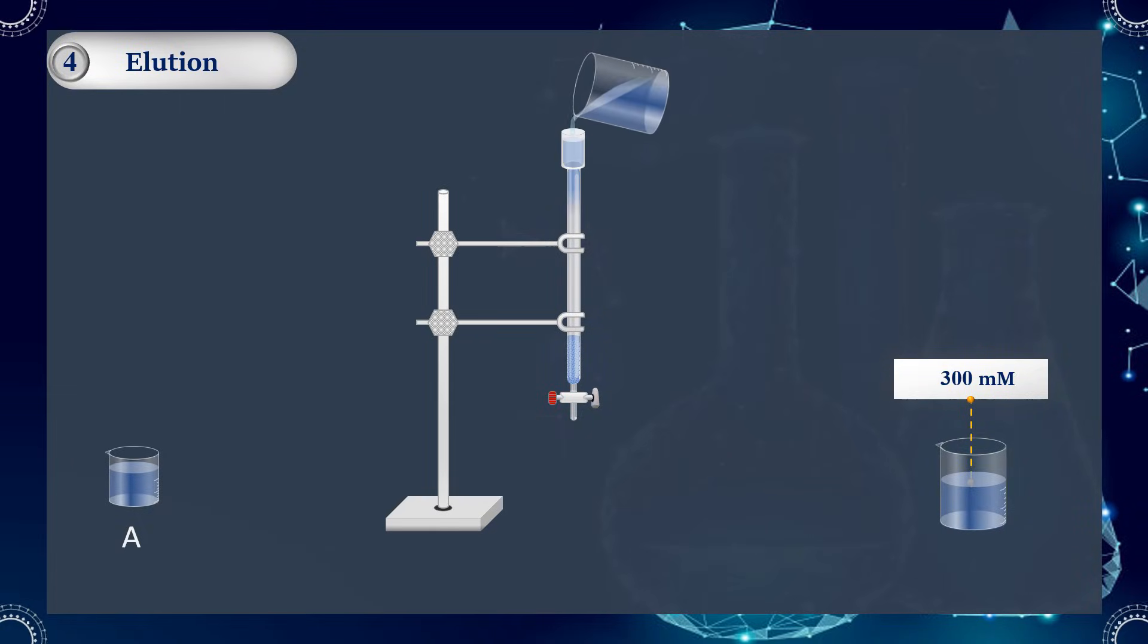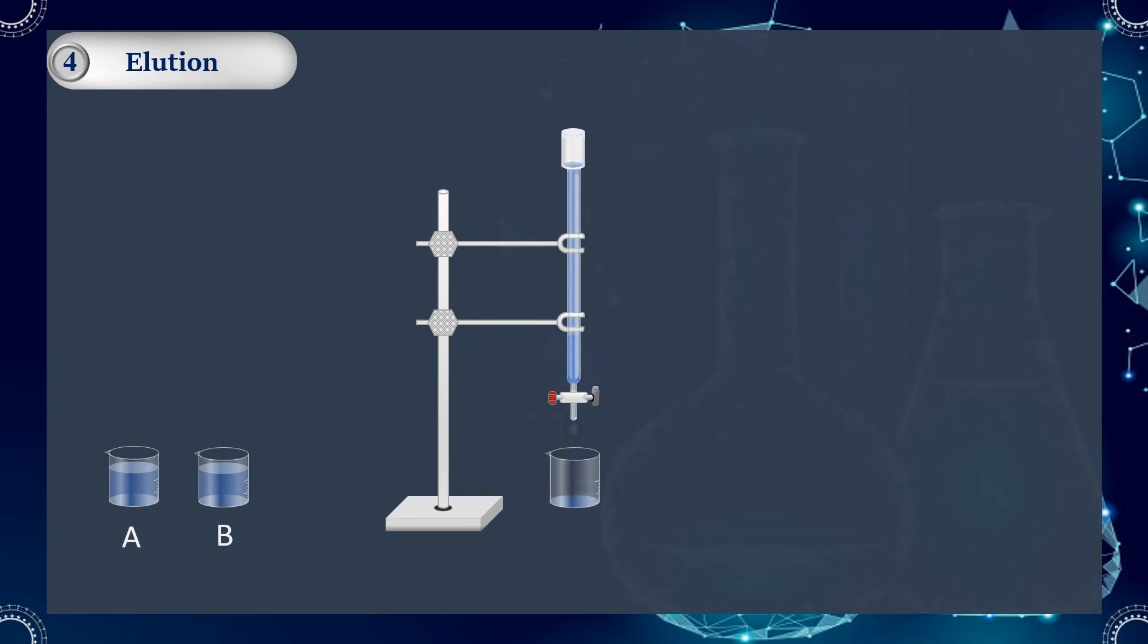Protein B has the lowest net positive charge, so it can be eluted first. Then, protein C with the highest net positive charge can be eluted next by increasing the salt concentration.